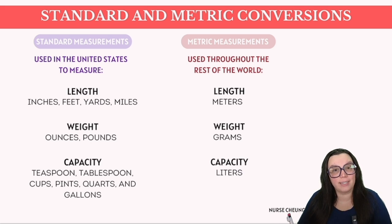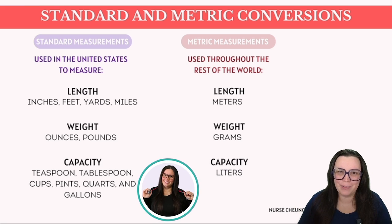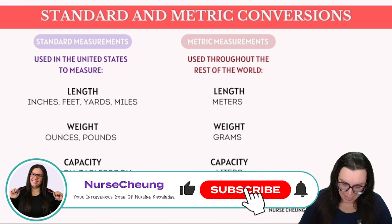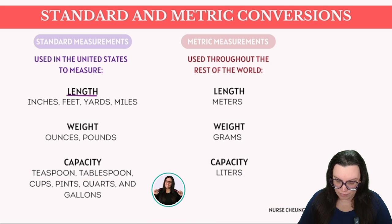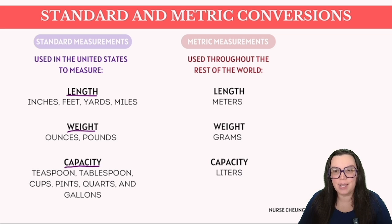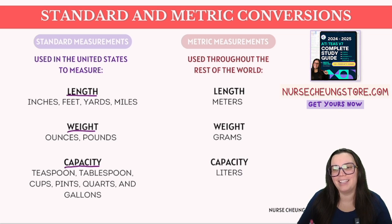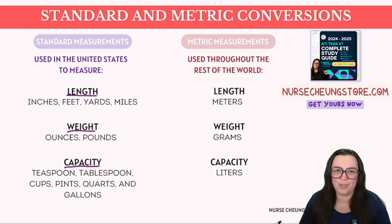Starting with the standard system, also known as the United States customary system, it includes units such as length — inches, feet, yards, and miles. We've got weight where we use ounces and pounds, and we have capacity where we use teaspoon, tablespoon, cups, pints, quarts, and gallons.